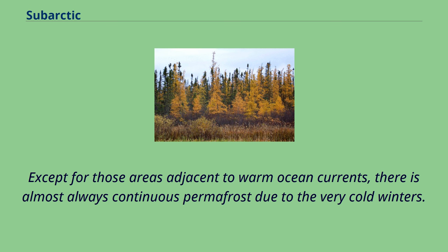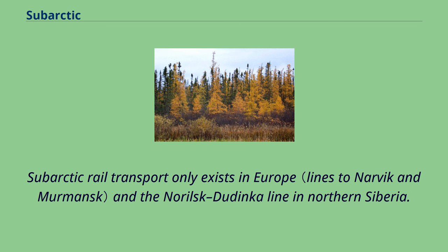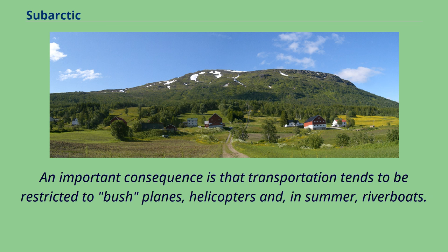Except for areas adjacent to warm ocean currents, there is almost always continuous permafrost due to the very cold winters. This means that building in most subarctic regions is very difficult and expensive, cities are very few and generally small, whilst roads are also few. Subarctic rail transport only exists in Europe and the Norilsk-Dudinka line in northern Siberia. As a result, transportation tends to be restricted to bush planes, helicopters, and in summer, riverboats.